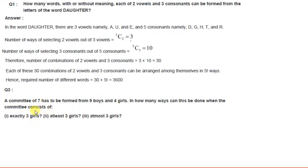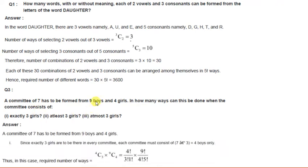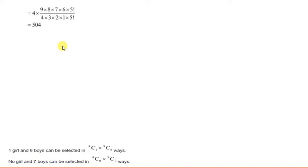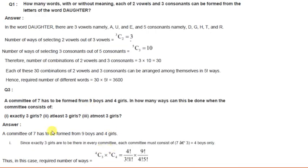From 4 girls, 3 girls can be selected, and from 9 boys, 4 boys can be selected in 9C4 ways. So the total ways of selection by multiplication rule is 4C3 multiplied by 9C4. After calculation — factorial 4 divided by factorial 3 into factorial 1, and factorial 9 divided by factorial 4 into factorial 5 — we get 504.